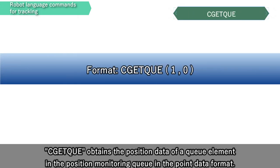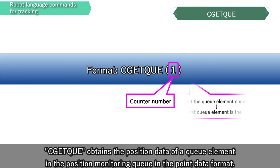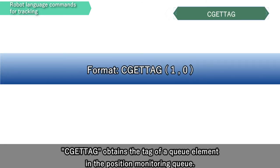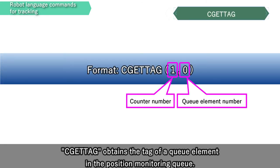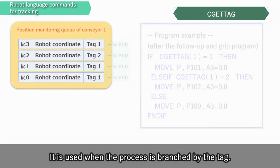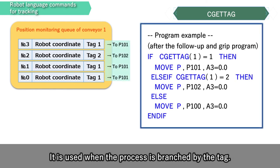C-get queue obtains the position data of a queue element in the position monitor in queue in the point data format. C-get tag obtains the tag of a queue element in the position monitor in queue. It is used when the process is branched by the tag.